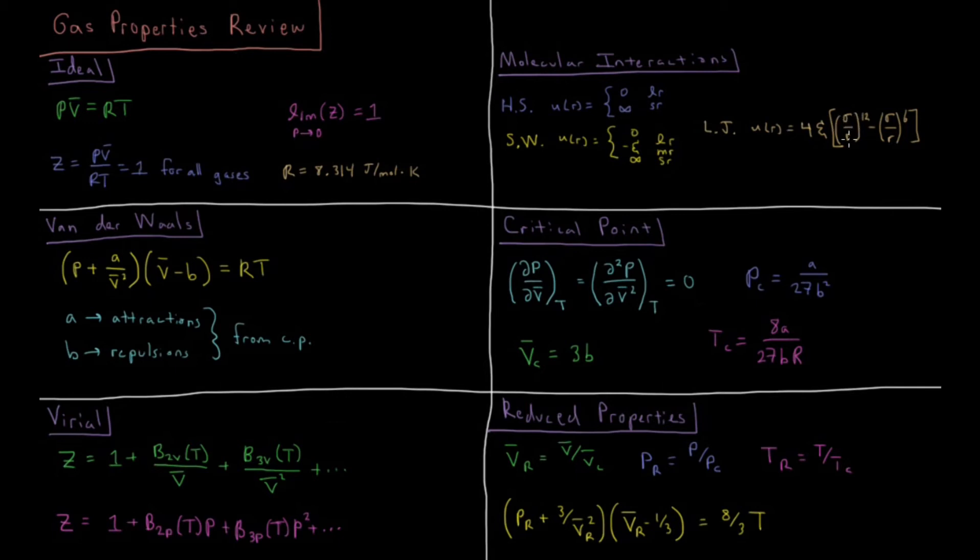So you have sigma over r to the 12th minus sigma over r to the 6th. It's alternatively sometimes called a 6-12 potential for those polynomial powers.